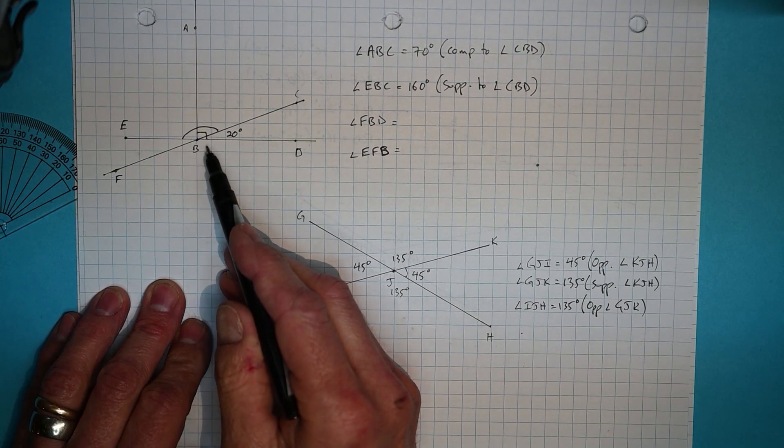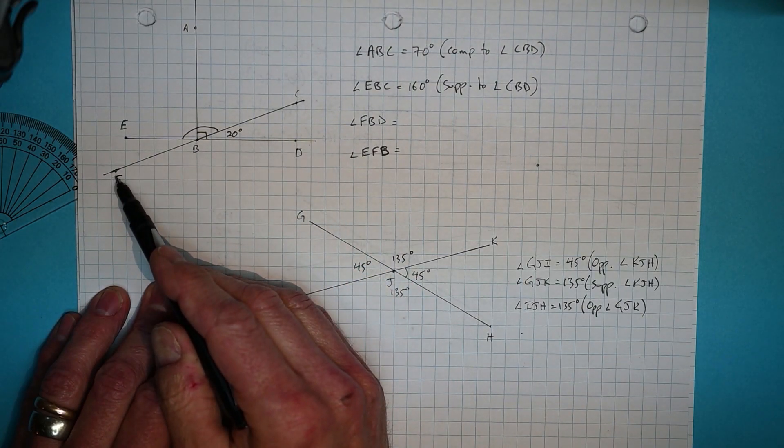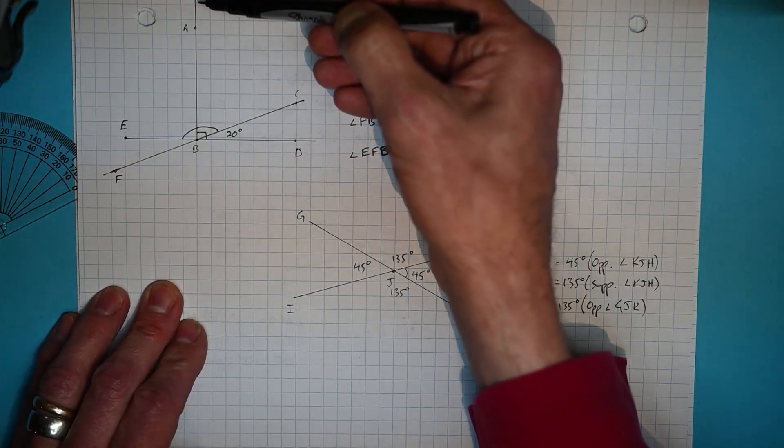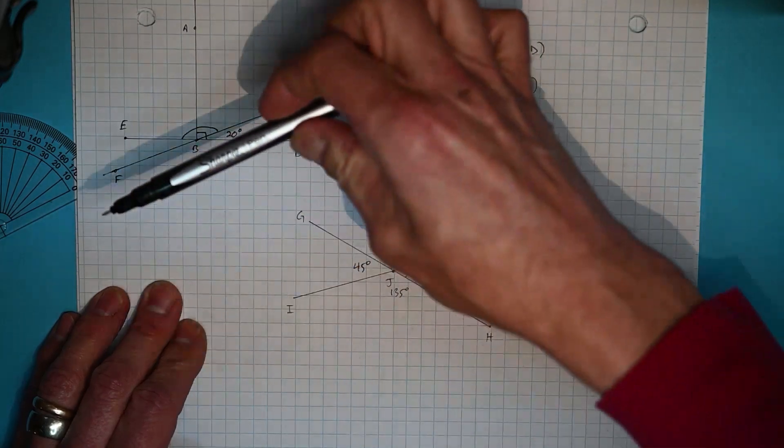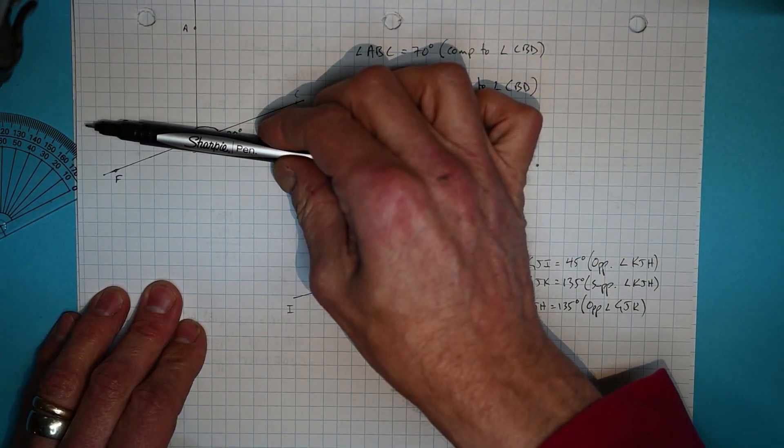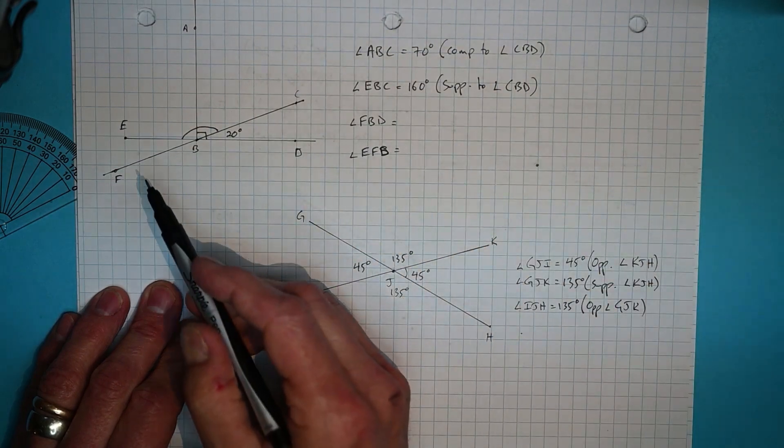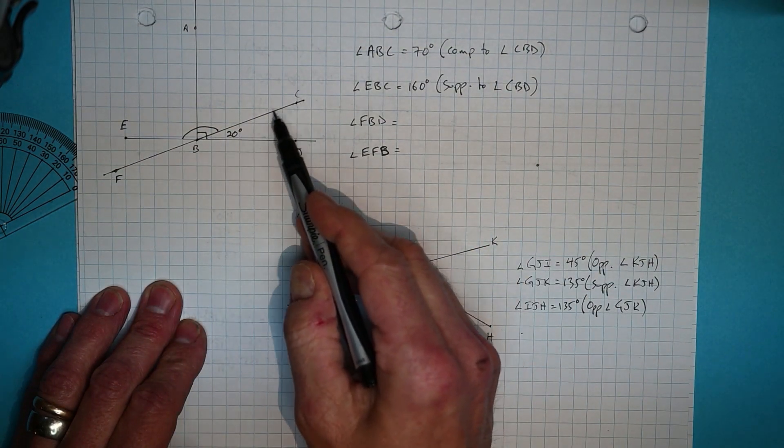FBD. This angle down on the bottom. If you're able to kind of once again filter this line out of your thinking, you'll see we just have two lines that intersect each other. And we already know what this angle is on top.